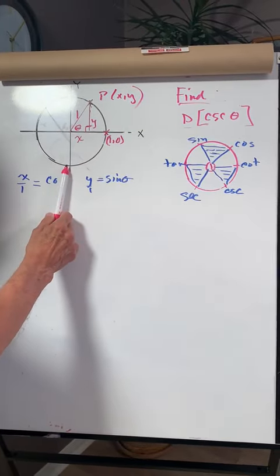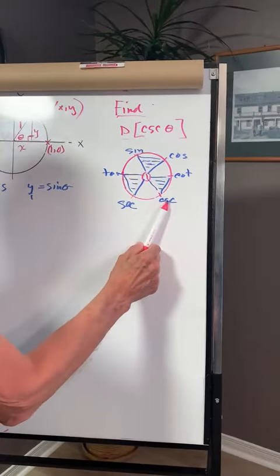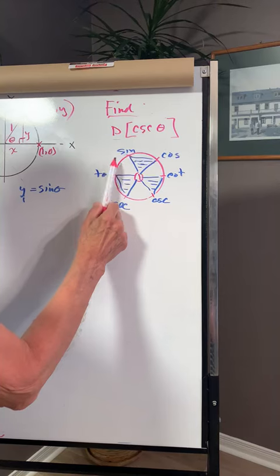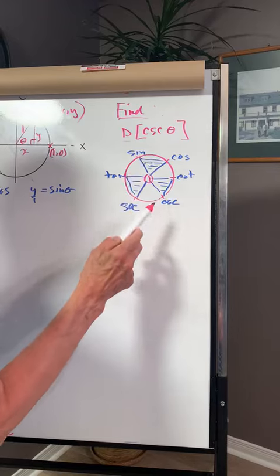x over 1 is cos, y over 1 is sine. Cosec is really 1 over sine, or sine is 1 over cosec, and sine times cosec equals 1.